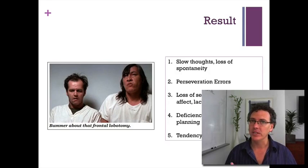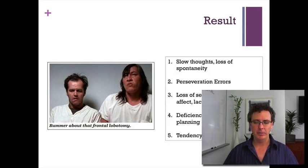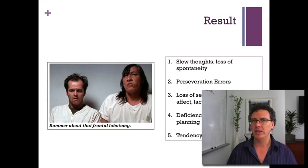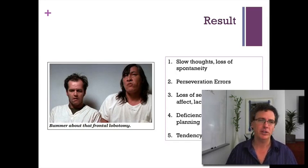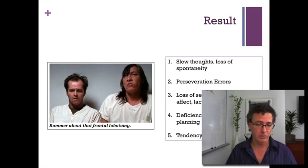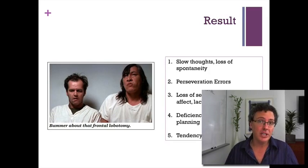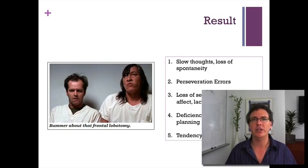People are told to sort these cards without being told what they're sorting on. It could be shape — put all the circles here, all the squares here. It could be color — put all the red things here, all the blue things here. Or it could be number — put things with one item here, two here, three here.